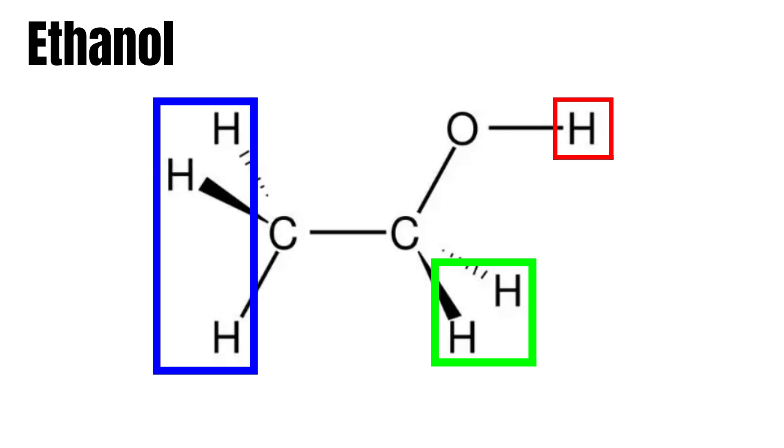Spin-spin splitting, or simply splitting, occurs as a result of neighboring protons. Meaning that we have to look at the protons on the neighboring carbons to find out how the split occurs.